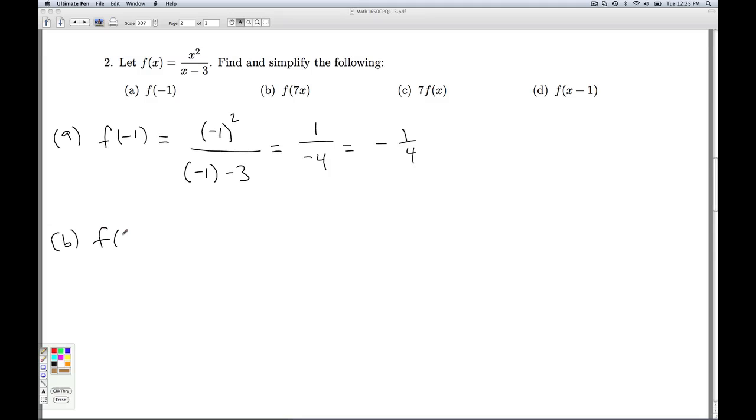Part b, we're asked to find f of 7x. So once again, everywhere I see the x, I'm going to replace it with the quantity 7x. So up top, I've got the quantity 7x squared divided by 7x minus 3. I simplify that. When I square 7x, I'm squaring the 7 and the x. So I get 49x squared on top and 7x minus 3 on the bottom.